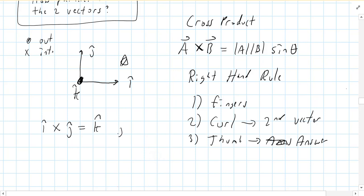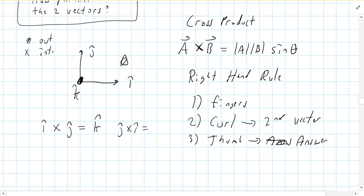Now try j cross i. Point your karate chop up the page, then rotate your right hand until you can curl your fingers to the right. When you stick your thumb out, it should point into the page — the negative k direction.